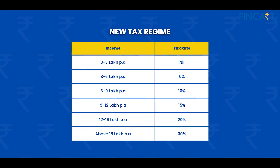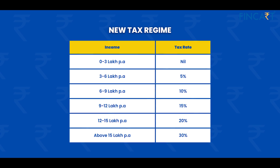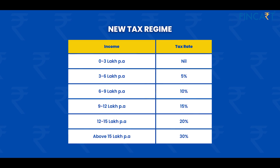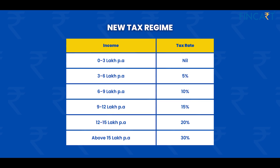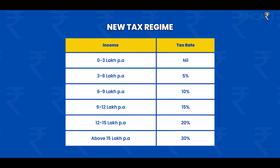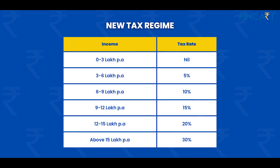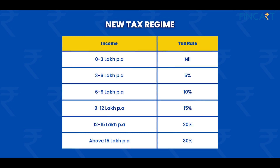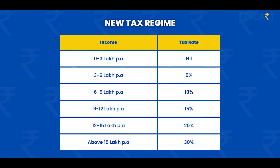The new tax slabs are as follows: zero to three lakh rupees — nil tax; three to six lakh — 5% tax; six to nine lakh — taxed at 10%; nine to twelve lakh — taxed at 15%; and twelve to fifteen lakh rupees — taxed at 20%.